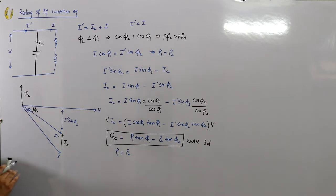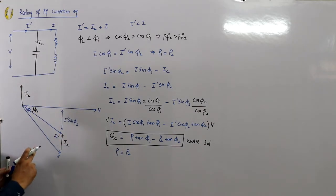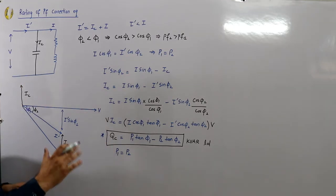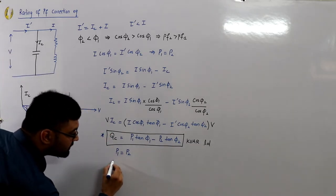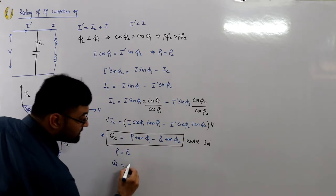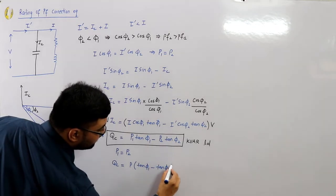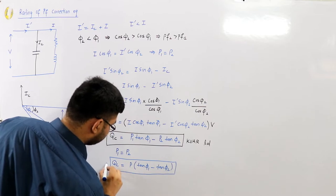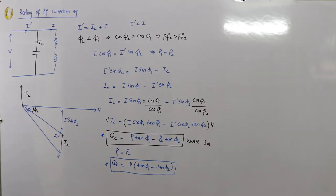Note that P1 equals P2 in this case, but there will be questions where P1 does not equal P2 — we will use the full formula for those. When P1 equals P2, the rating of the capacitor simplifies to: QC = P(tanφ1 − tanφ2). This is the formula you will use to find the KVAR rating of the capacitor.